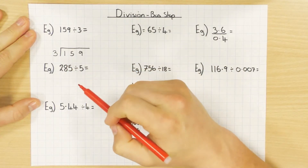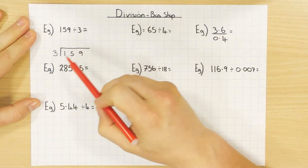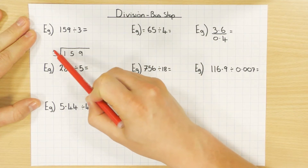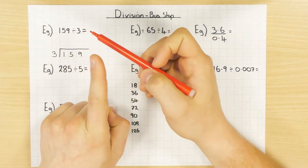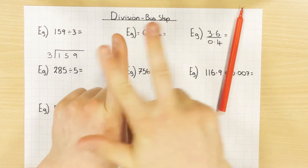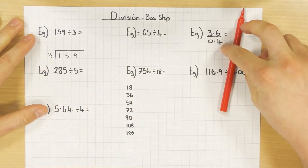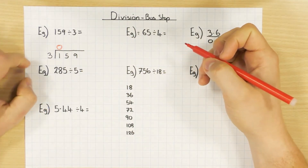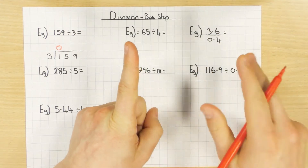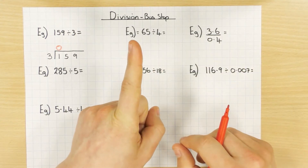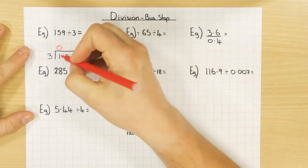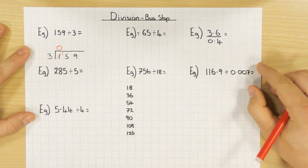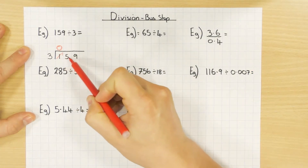With the bus stop, the first thing people always mess up is the very first step: you ask yourself how many times does 3 go into 1. Well, it doesn't — so we say it's 0. But what's left over? People always say 3, but that's not the case. If you have 1 and 3 doesn't go into it, you have 1 left. Make sure when you carry that remainder over you keep it as 1.